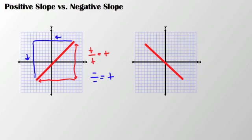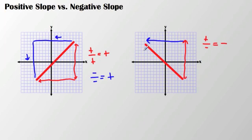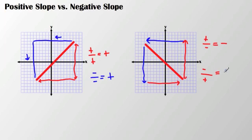Now let's look at a negative slope. From one point to the next, as far as vertical change goes, I have a positive rise because I am going up on the y-axis. However, in terms of the x-axis, I end up with a negative run. So I have a positive divided by a negative, and that gives me a negative slope. Again, looking from the other direction, I am going down on the y-axis — a negative value — but going from left to right on the x-axis gives me a positive value. So my rise is negative and my run is positive, which is still a negative divided by a positive, and that gives me a negative slope.